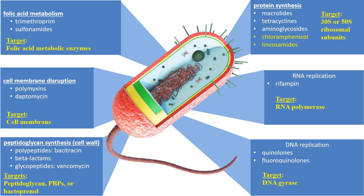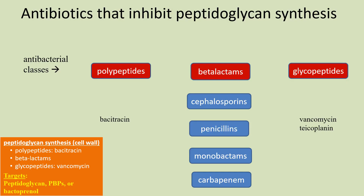Next I'll show you the specific antibacterial drug classes and their specific targets in more detail. I'll begin with the antibacterial drugs that prevent the synthesis of the peptidoglycan component of the cell wall. This group of antibacterial drugs contains the classes of polypeptides, beta-lactams, and glycopeptide drugs.